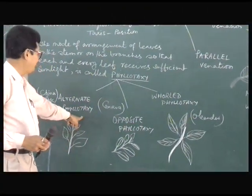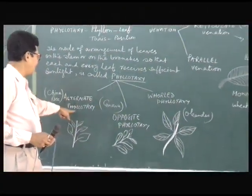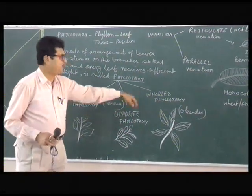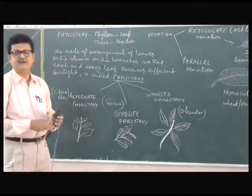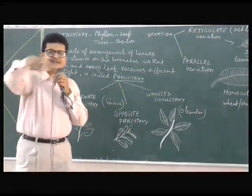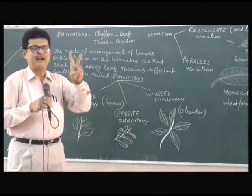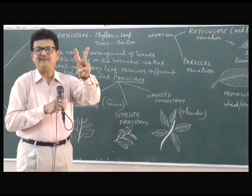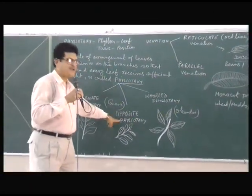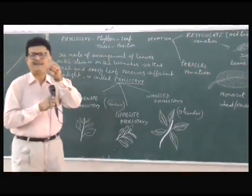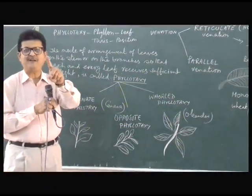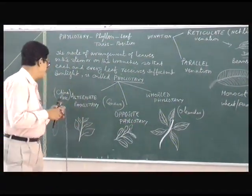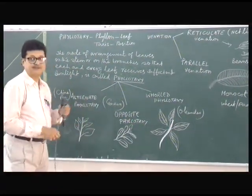There are three types of phyllotaxy: alternate phyllotaxy, opposite phyllotaxy, and whorled phyllotaxy. Whorled means a circular arrangement. A couple of leaves growing from the same node is called opposite phyllotaxy, and a single leaf growing from each node is called alternate phyllotaxy.